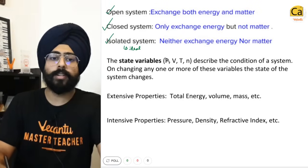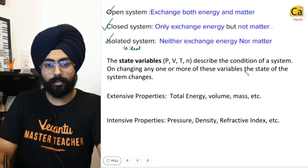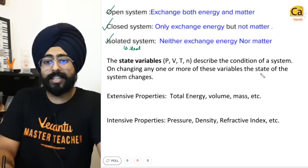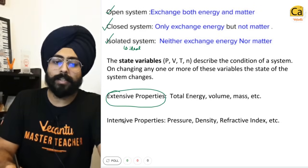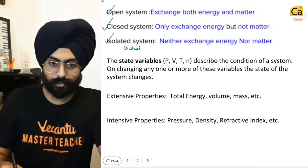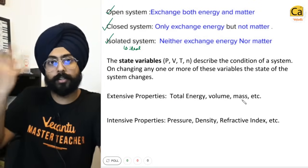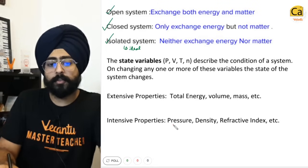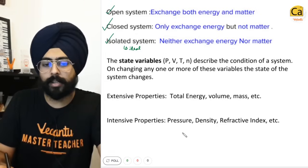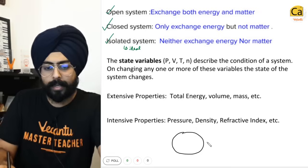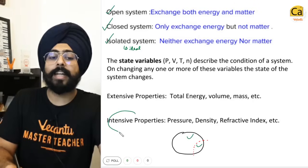A system can be defined by its state variables: pressure, volume, temperature, and number of moles. These describe the condition of a system, and changing these variables will change the state of the system. Properties can be extensive — depending on the extent of the system (total energy, volume, mass) — or intensive, which do not depend on the extent (pressure, density, refractive index). A trick: cut a small chunk from a large system; if both have the same value of a property, it is intensive.